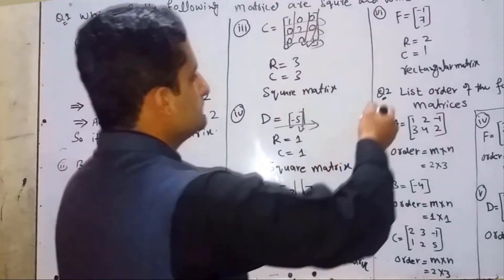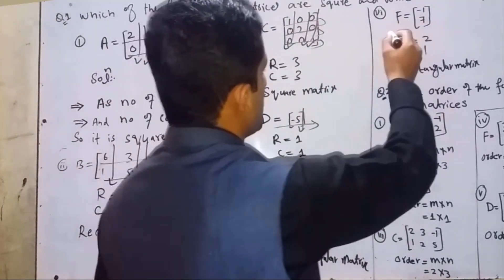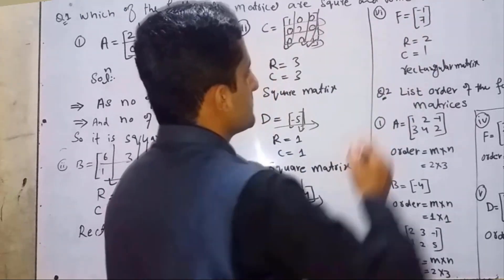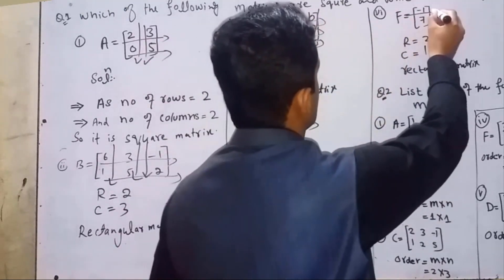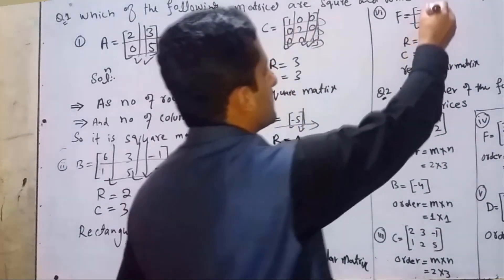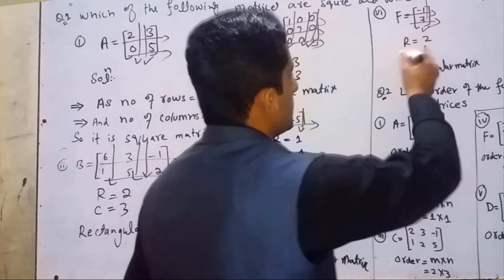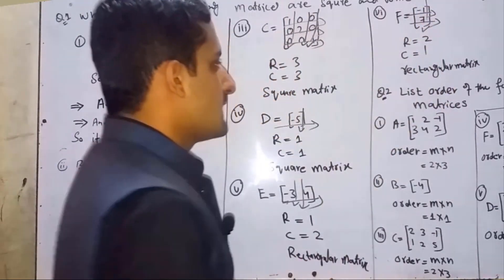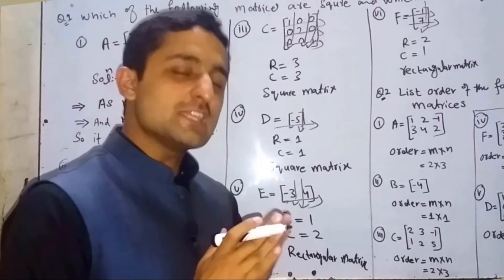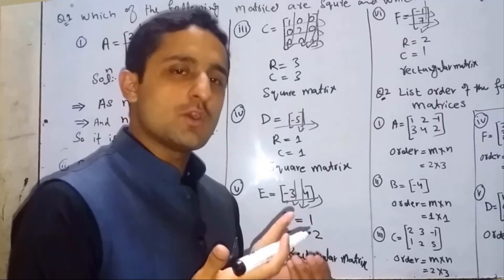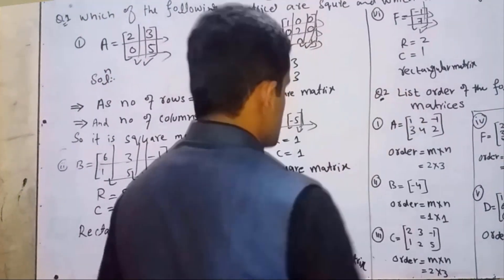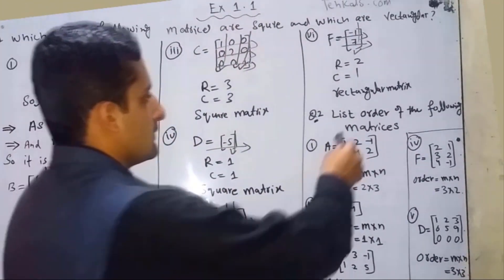Last part f: F = [[-1], [7]]. Number of rows = 2, number of columns = 1. It is a rectangular matrix because number of rows is not equal to number of columns. Question number 2: List the order of the following matrices.